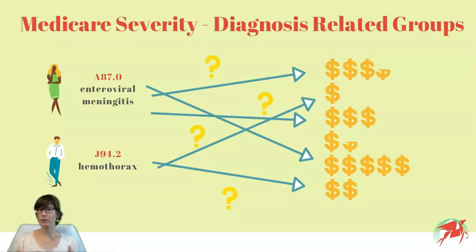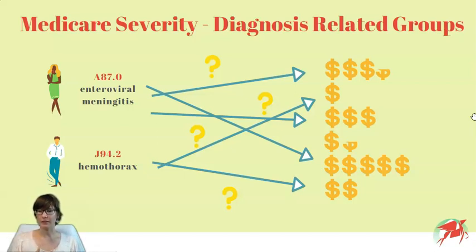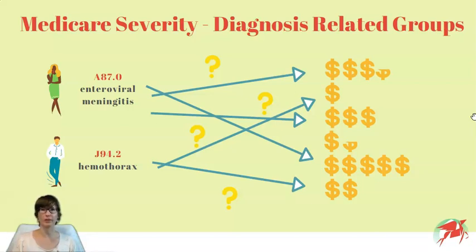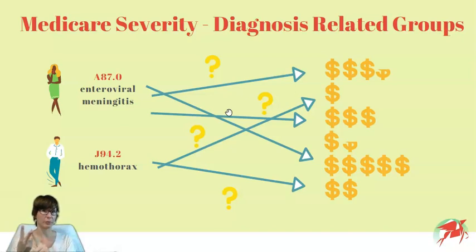What are MSDRGs and why do we have this system? In the most simplistic terms, MSDRGs are kind of a sorting mechanism that will help CMS quickly decide what payment bracket a patient should fall into for their inpatient stay. The MSDRG will be connected to either the patient's principal diagnosis or the principal procedure that is performed.